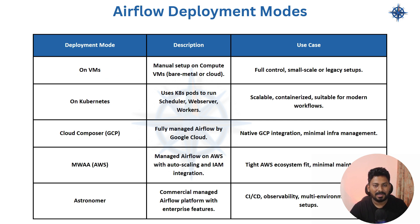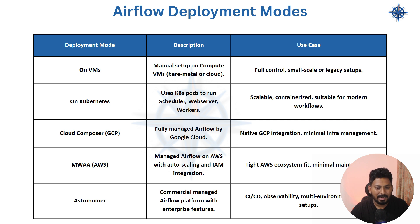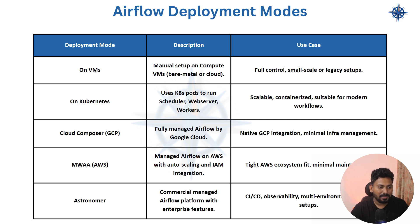Let's go through each deployment mode. Airflow on VM is used for testing or POC, where all components — scheduler, web server, worker, metadata DB — run on a single VM with one DAGs folder. Airflow on Kubernetes runs each component as a Kubernetes pod, using a Kubernetes or Celery executor, with DAGs synced via persistent volume or GCS/S3 bucket.